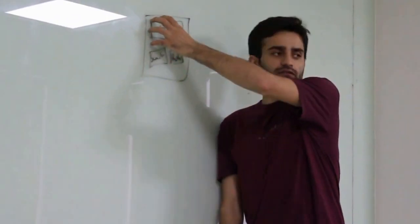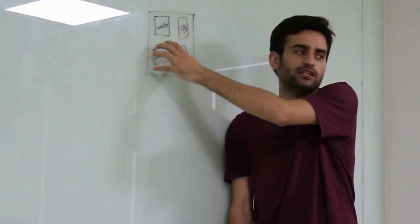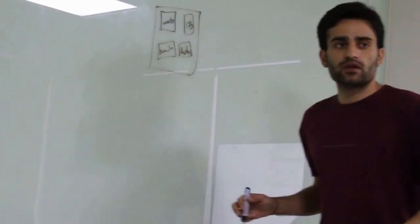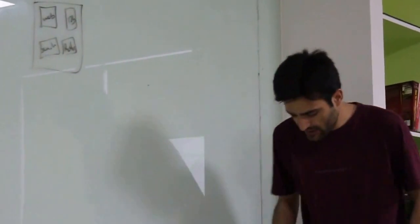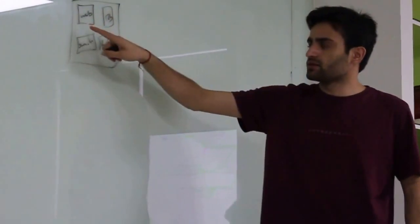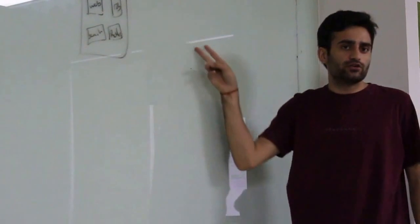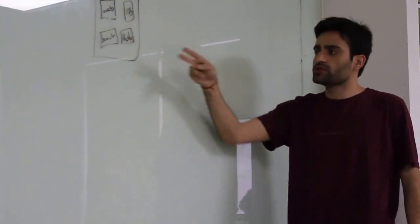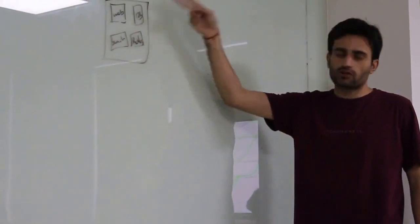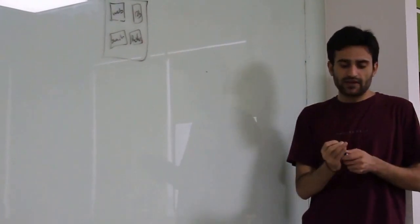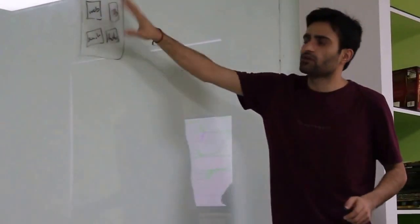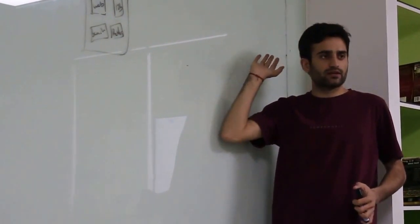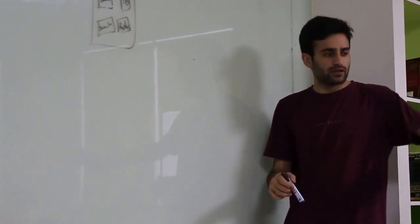If you want to deal with a lot of users, you need multiple web servers running, multiple instances of each component. One way to do that is rent ten computers on AWS and manually transfer files - put the web server into two computers, install Elasticsearch in two, install Redis in two, install MongoDB in two. That's what you do manually. That's what DevOps people do.